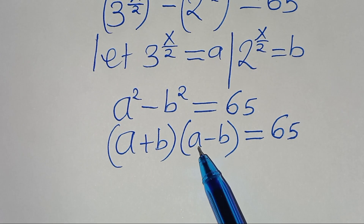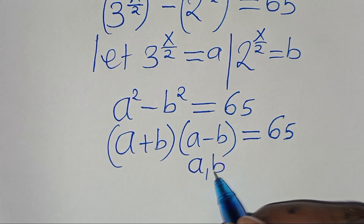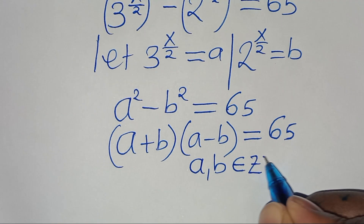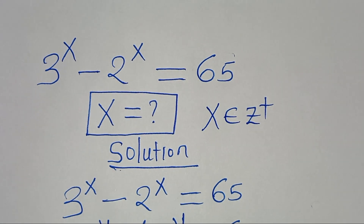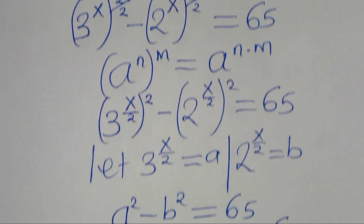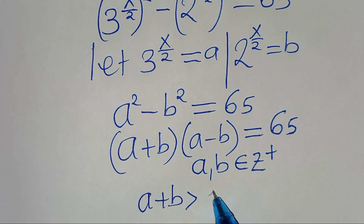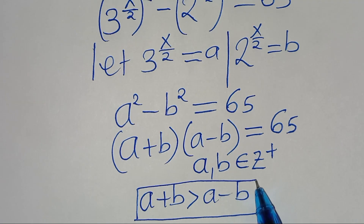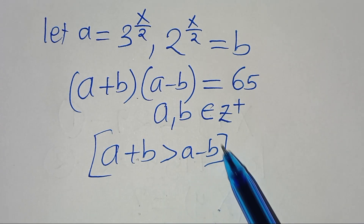We have a plus b multiplied by a minus b, this is equal to 65. We note that a and b are members of positive integers, and that a plus b is greater than a minus b.